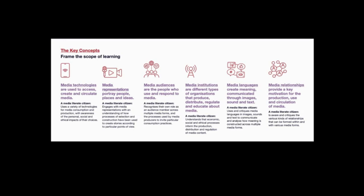As you can see, the AMLA framework includes media technologies, media representations, media institutions, media languages, and media relationships. These key concepts define the parameters and focus for media literacy education efforts or initiatives, whether that's a program, a resource, or a classroom activity. While the AMLA model is a little different from some other versions, generally the key concept approach used in the UK, Australia, and many other places has stayed quite stable over the decades.